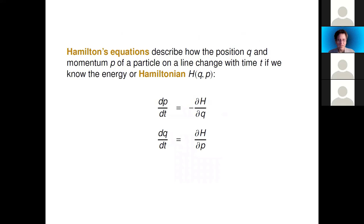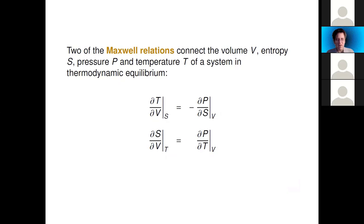Here are Hamilton's equations — some of you will know them already. They describe how the position q and momentum p of a particle change with time if we know the energy as a function of q and p. To keep things simple I'll just have a particle on a line, so position is just a number and momentum is just a number. The time derivative of momentum is minus the derivative of the energy with respect to position, and the time derivative of position is the derivative of the Hamiltonian with respect to momentum.